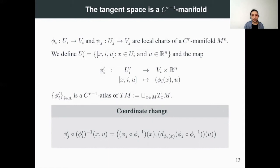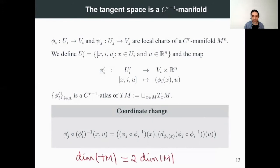What we have so far is that the tangent space of M is a C^(r-1) differentiable manifold, and the dimension of this tangent space is twice the dimension of M, because V_i is contained in R^n. In this lecture, we defined the source and target spaces for the differential of a differentiable map between differentiable manifolds. In the next lecture, we are going to state in more detail the differential of a map and its properties. Thank you for your attention.